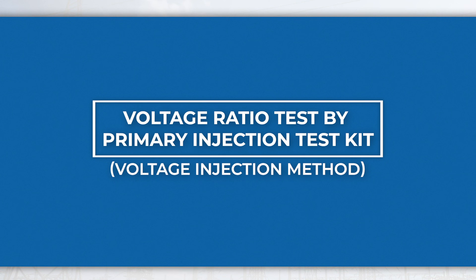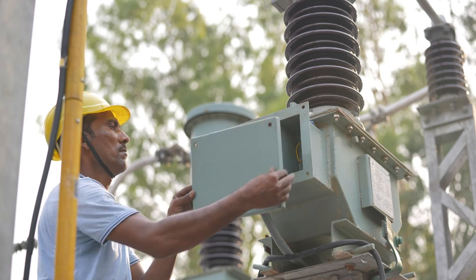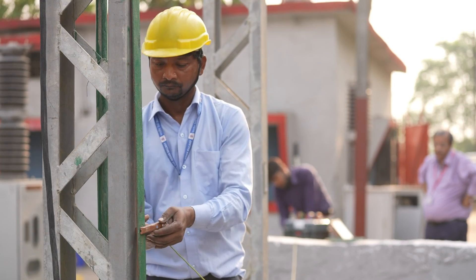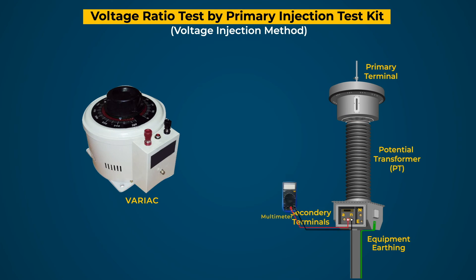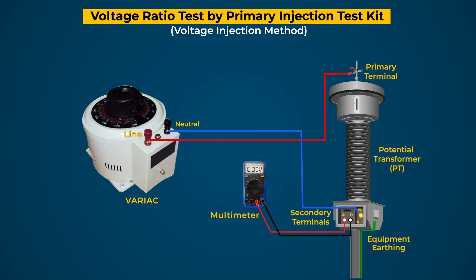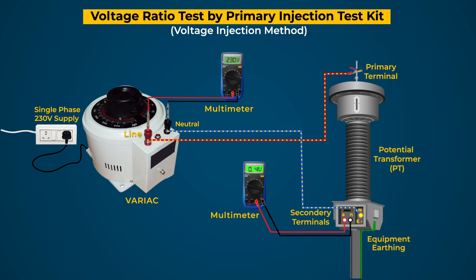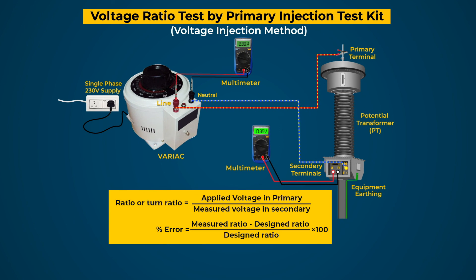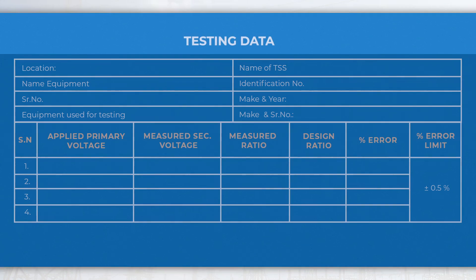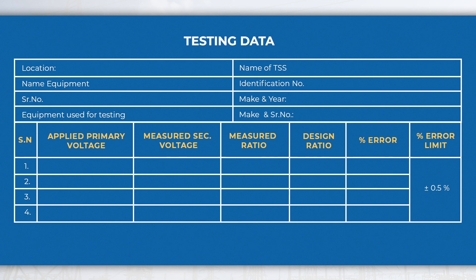Voltage ratio test by primary injection test kit (variac method): This test method is generally followed at sites on railways. Connect the AC voltmeter at both terminals of the secondary winding. Then connect the output terminal of the variac to both primary terminals and connect the AC voltmeter across the variac. Connect the single phase 230 V AC supply and apply the test voltage across the primary terminals. Check the induced voltage in the secondary winding by voltmeter and calculate the ratio and percentage error of the PT using the formulas. If the ratio error is found beyond the permissible limits, take corrective actions. Testing data may be recorded in this format for further investigation and future reference.